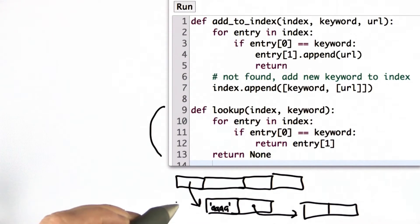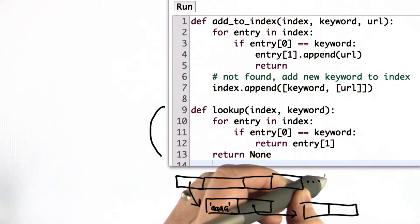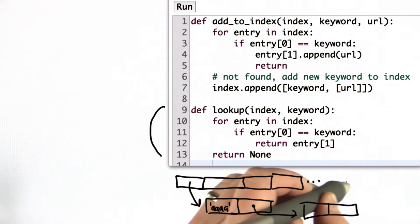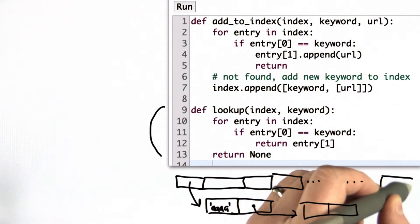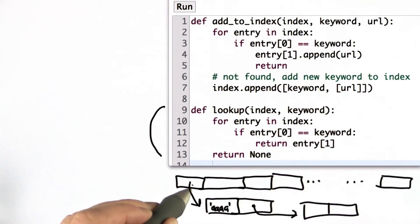So this is our index structure, right? It's a list of elements. If we had 10 million of them, it's a very long list with lots of elements. But each element is a list itself where we have the keyword followed by the list of URLs where it appears.